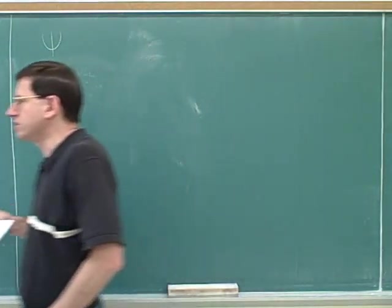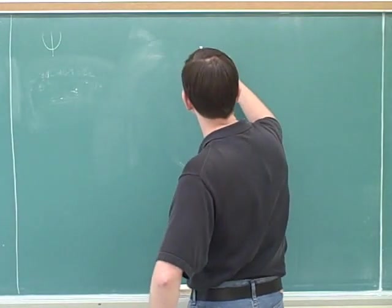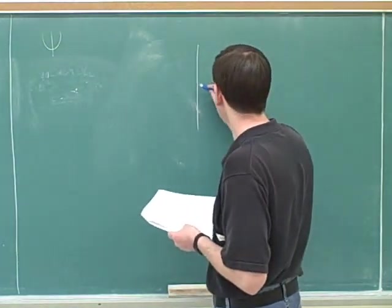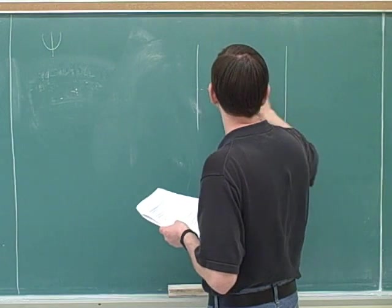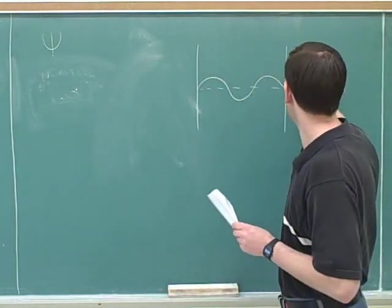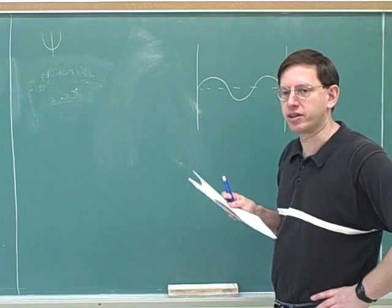Now, in real life you're usually dealing with an object in three-dimensional space, but the math for that is too hard for an introductory course like this. So in your problems you're usually dealing with a particle in a one-dimensional space — what they call a one-dimensional box. So we're going to imagine that the particle is trapped in a one-dimensional box. This might be the box, and then maybe the wave function psi might look like this.